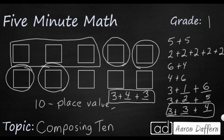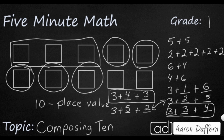So 3 plus 1, 3 plus 2, 3 plus 3, 3 plus 4 — you know what's coming next is 3 plus 5, which leaves 2. And then 3 plus 6 is our last one. These are all the different ways that we can use to make 10.